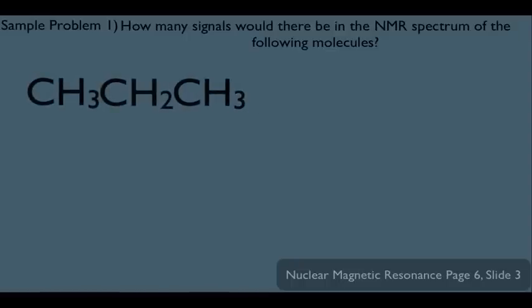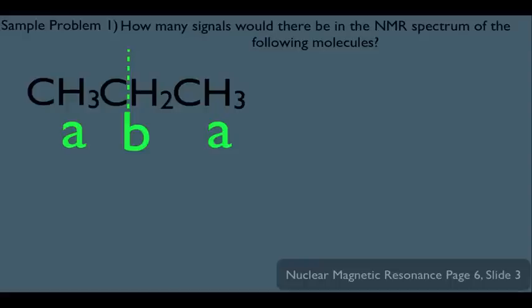Let's look at this molecule. How many signals in the HNMR would we see? The way it works is very simple — just start anywhere. All these hydrogens here on the left are A-type hydrogens; they're in a particular electronic environment. Then move on to the next hydrogens — let's call them B — they're in a different environment than the methyl hydrogens. However, these last hydrogens on the right: notice this molecule has a plane of symmetry, which means these hydrogens would be in an identical environment to the A-type hydrogens, so we call them A-hydrogens as well.